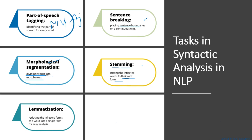Lemmatization is also like stemming, but in lemmatization we reduce the inflected forms of a word into a single form for easier analysis. In stemming, we remove those words, but in lemmatization we reduce the forms — for example, reducing the word 'is' to 'be.' Words that contain a base form are converted into their normal dictionary form.